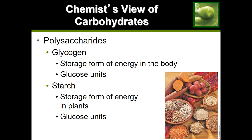Glycogen and starch are the way that we store glucose. In our body, we have glucose units in our bloodstream — our blood sugar. Your body tries to maintain a certain amount of glucose in the bloodstream; the rest it wants to store away. It links all those extra glucose units together, and that long chain is what we call glycogen. Glycogen is just a long string of glucose units strung together, and it is the way our body stores excess glucose.